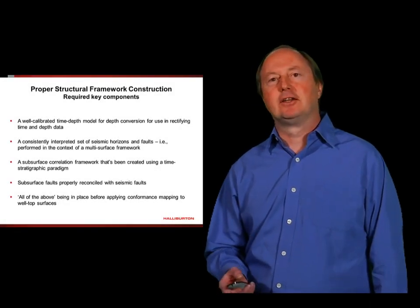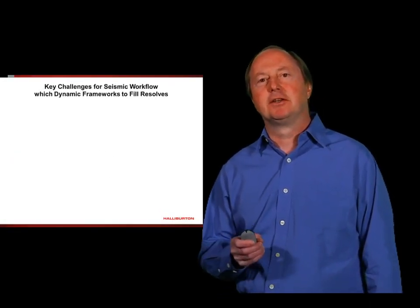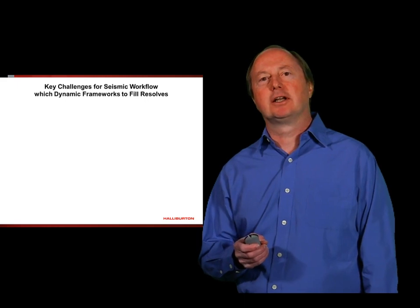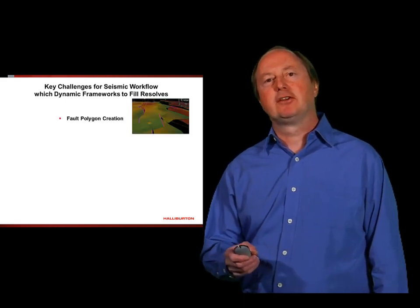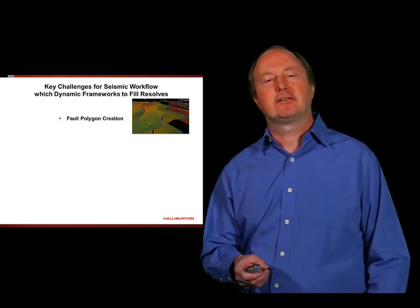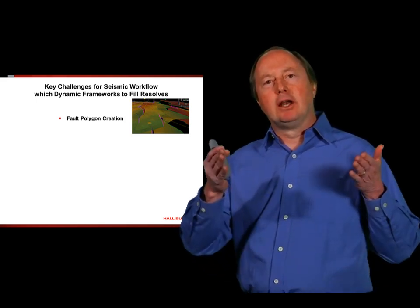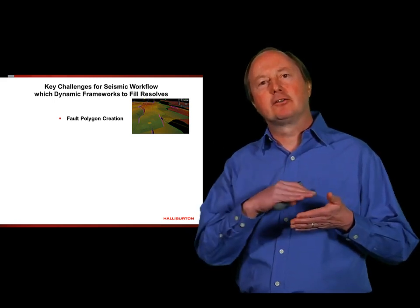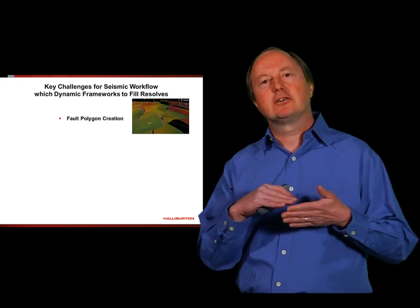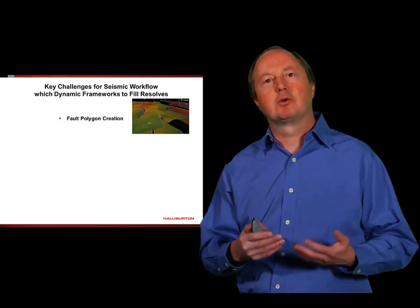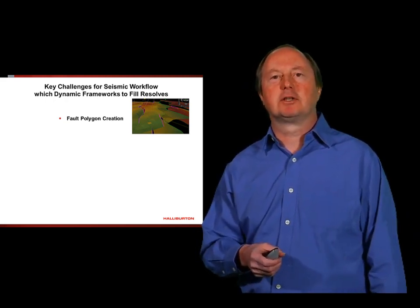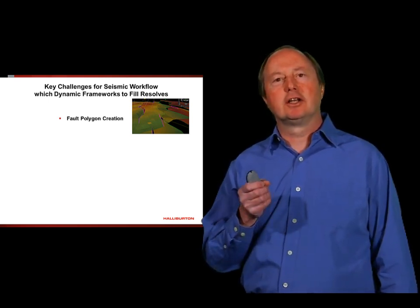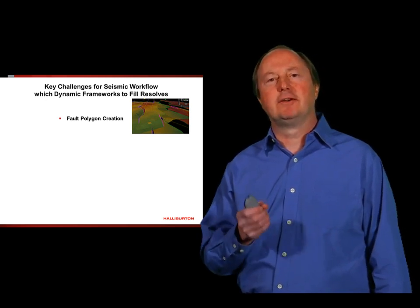Now, there are three things the interpreter can really gain if they invest in building the framework while interpreting. One of them is a very consistent geologically sound set of fault polygons. What traditionally happens is the interpreter used to digitize the fault polygons based on the gaps in the horizon interpretation. However, this isn't as accurate because a fault plane tends to curve and die out, and the surfaces are also curved that you're trying to map. And when you intersect those two, which a framework will be able to do, you get a much higher quality interpretation. So the first thing as a geophysicist, if you invest in building a framework, you're going to get very high quality fault polygons with very little effort.